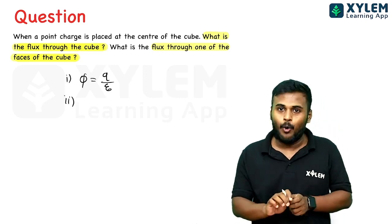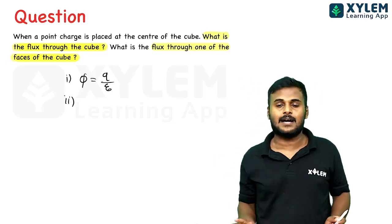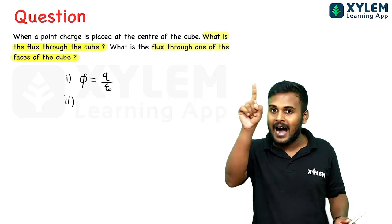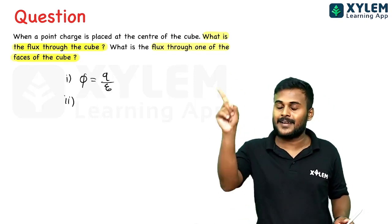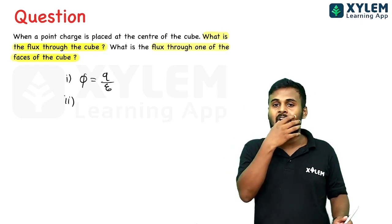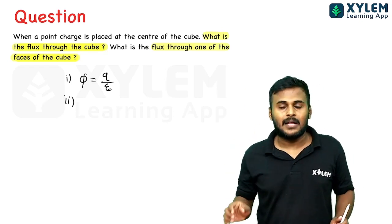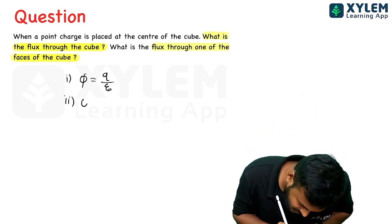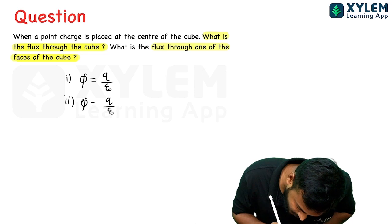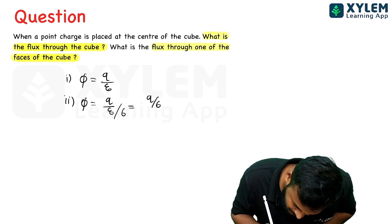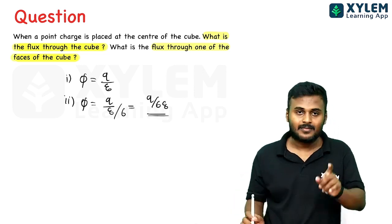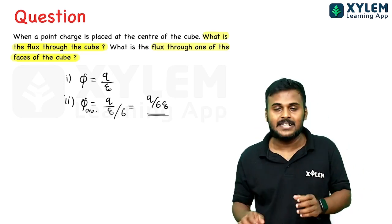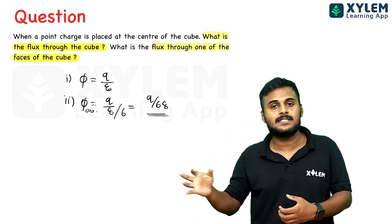The second part asks for flux through one face. A cube has 6 faces. Since the charge is at the center, by symmetry the flux is equally distributed. So flux through one face = total flux / 6 = q / 6ε₀.